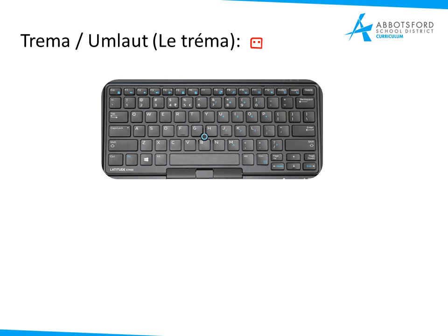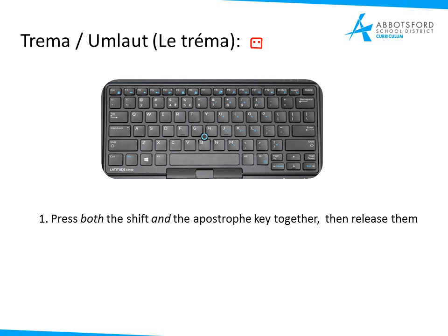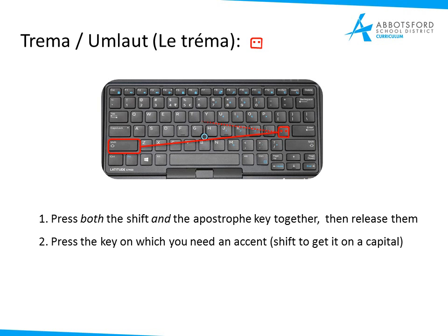For the tréma or umlaut — the two dots above a letter — same deal. You're going to press both Shift and the apostrophe key together. So the key ones to remember are the apostrophe key next to your Enter, and the tilde key just below Escape. Press both Shift and apostrophe together, then release them, and select the letter on which you want to place your accent.